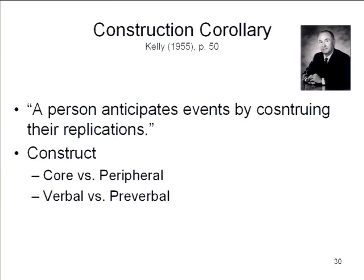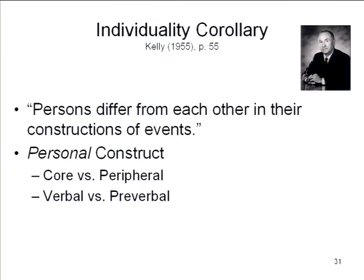The construction corollary: a person anticipates events by applying some construct to them, and we'll see that you can choose which construct you apply to a particular event. The individuality corollary: persons differ from each other in their constructions of events. Everybody carries in his or her head a different set of personal constructs — that's why they're called personal constructs. We don't all have the same ones, even if we grow up in the same culture, the same religious faith, the same schools, the same household.